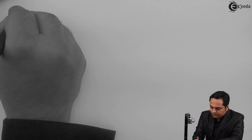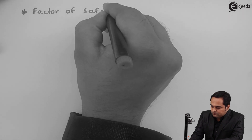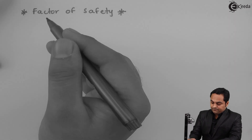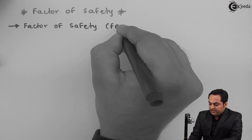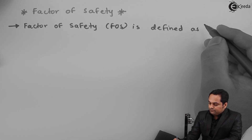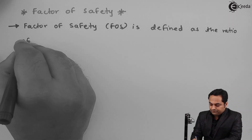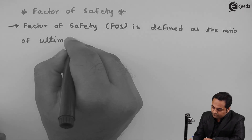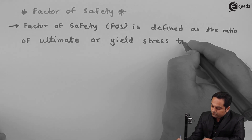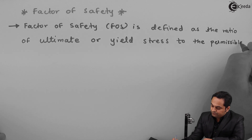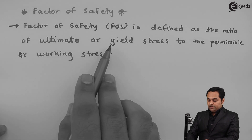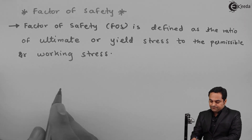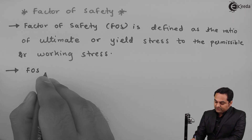Hello friends, in this video we will see what is factor of safety. Factor of safety, that is FOS, is defined as the ratio of ultimate or yield stress to the permissible or working stress.